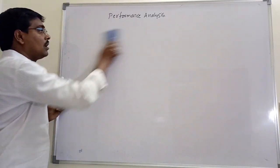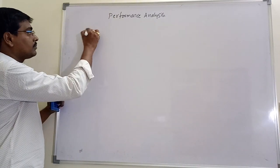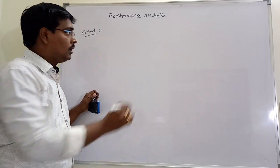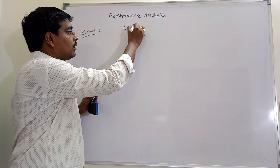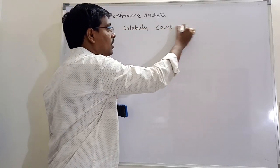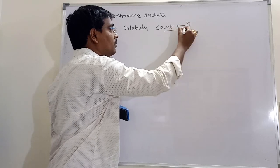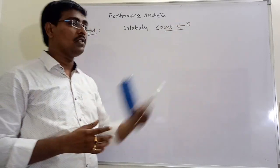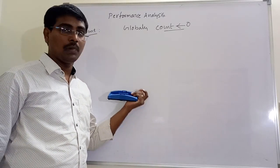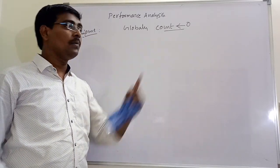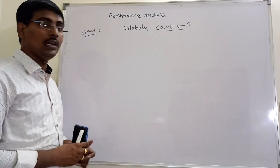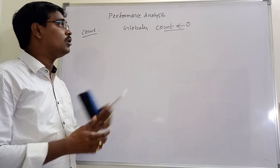First we will discuss the count method. In this method we globally initialize a variable count with value 0. For each and every valid step of the algorithm, increment the count value by 1.